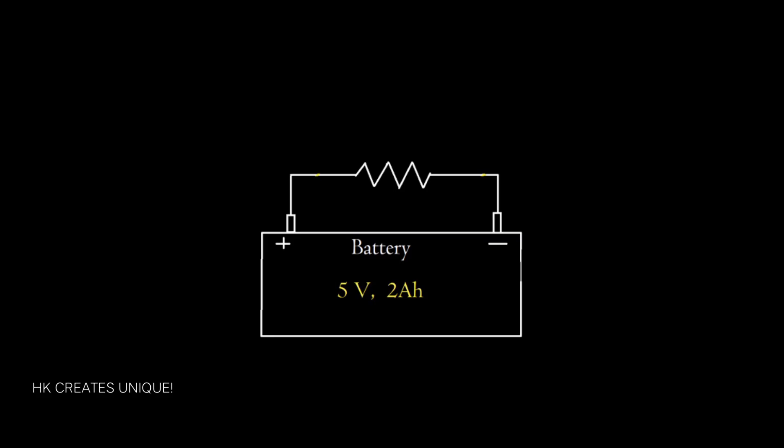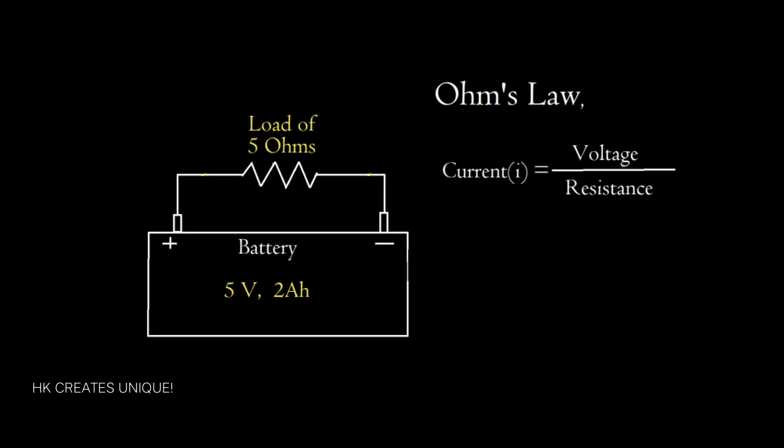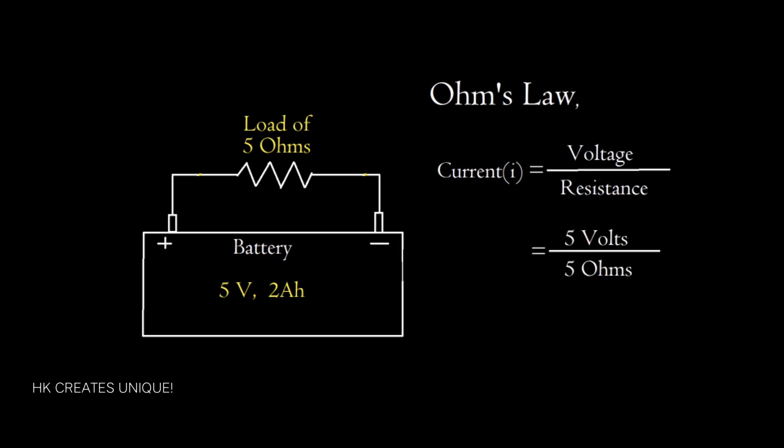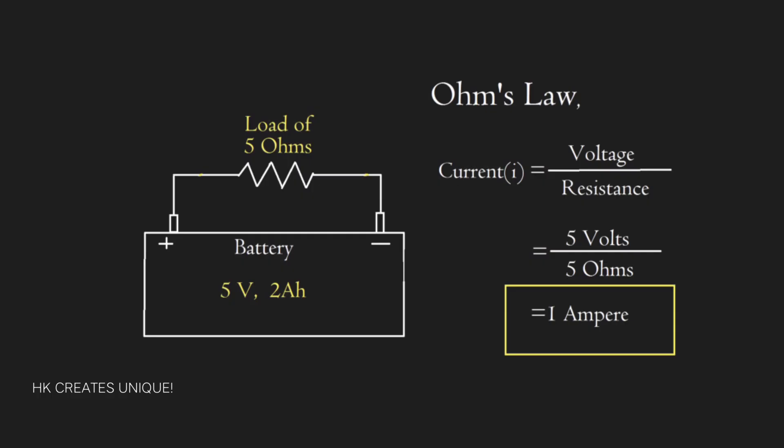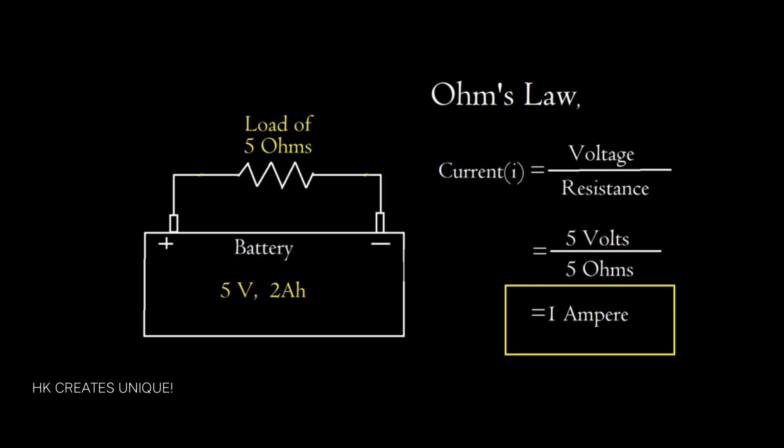Now, let's take another example. We have a load of 5 Ohms resistance, and we need to find how long a 5V 2Ah battery can supply current. First, find the current through the load. Apply Ohm's law: current equals voltage divided by resistance, which equals 5V divided by 5 Ohms. Therefore, current flow through the load is 1A.